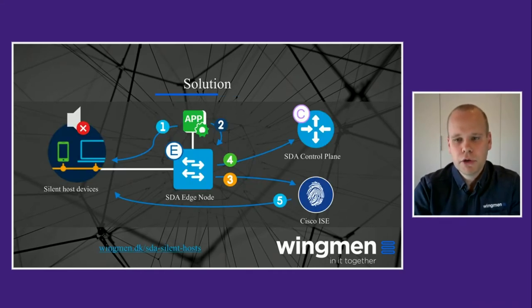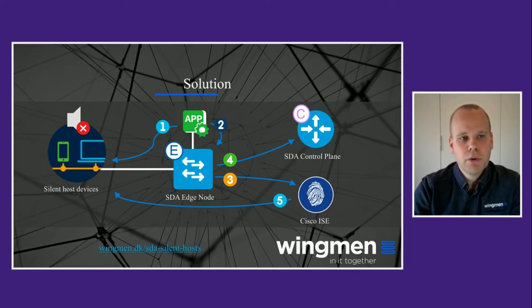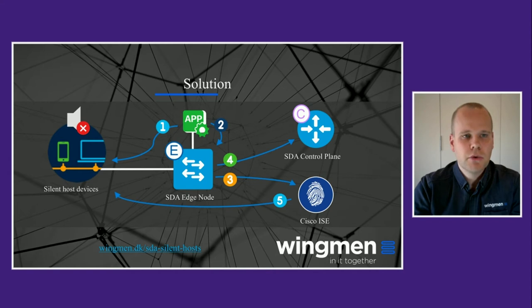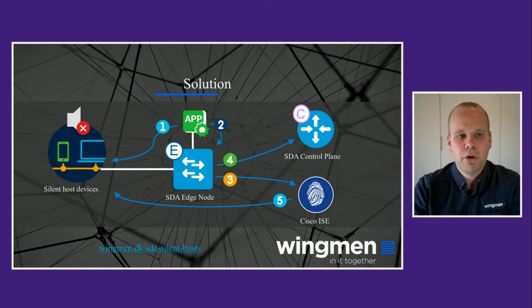Here is a quick overview of the solution. In the middle we have our SD Access edge node — that's basically the switch that connects all the endpoints to the network. We have lots of these throughout the manufacturing hall with devices connected to them. Usually when you connect and onboard a device onto the fabric, there is communication with the SD Access control plane nodes as well as the Cisco ISE platform. But in the case of silent hosts there is an issue because we never know these hosts are there. So in step one we need to monitor the switch for detection that an interface has gone online but without a properly authorized endpoint on that port.